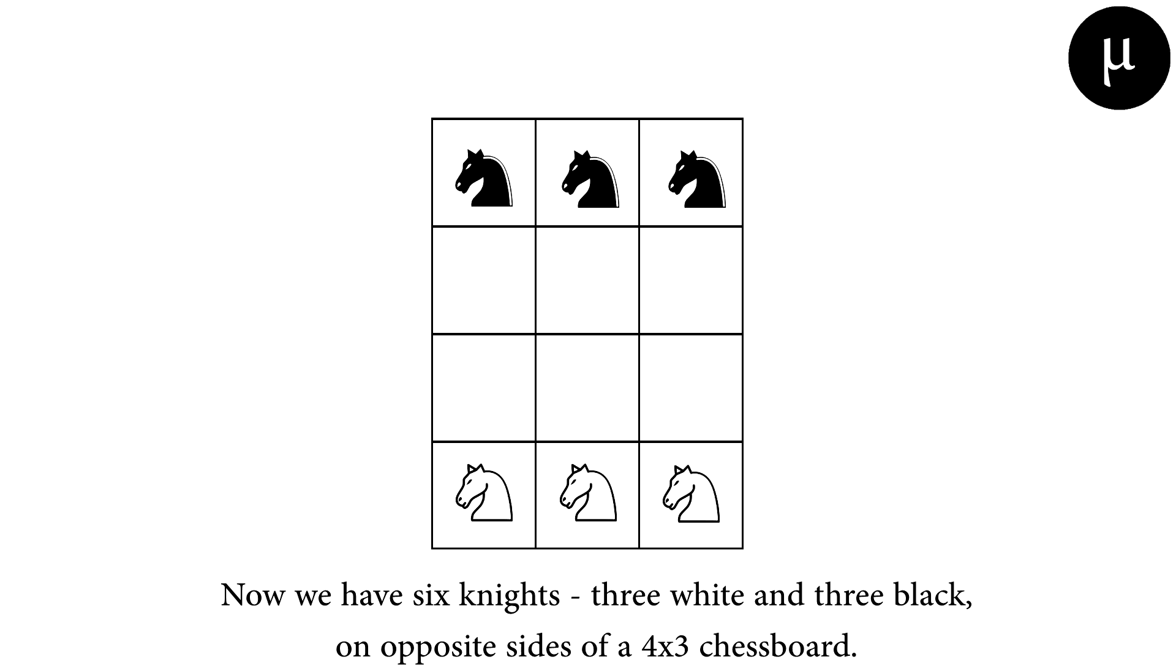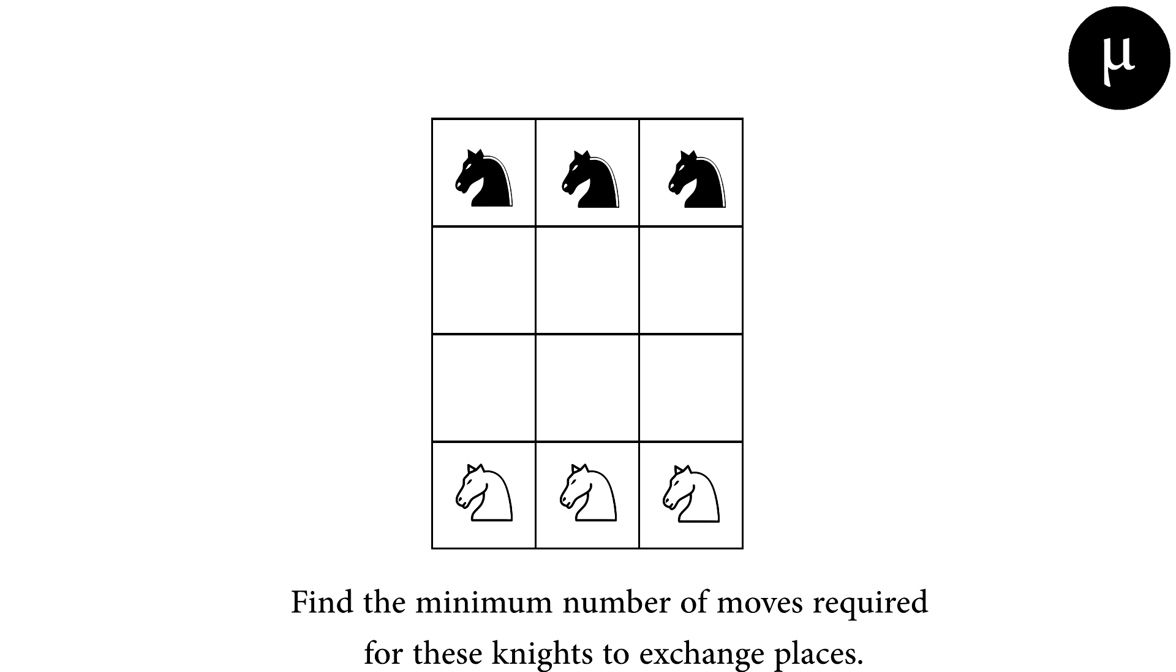Here is an exercise for you. Now we have 6 knights, 3 white and 3 black, on opposite sides of a 4 by 3 chessboard. Find the minimum number of moves required for these knights to exchange places.